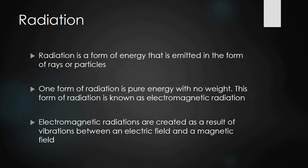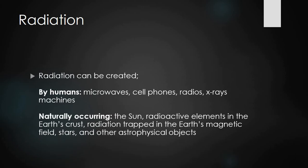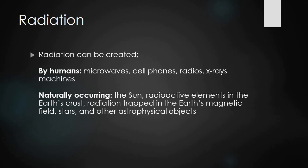Electromagnetic radiation results from the oscillations of electric and magnetic fields. Radiations can also be created by humans — for example, microwaves from microwave ovens, signals from cell phones, X-rays from X-ray machines, and signals from radios. These are all human-made sources of radiation.